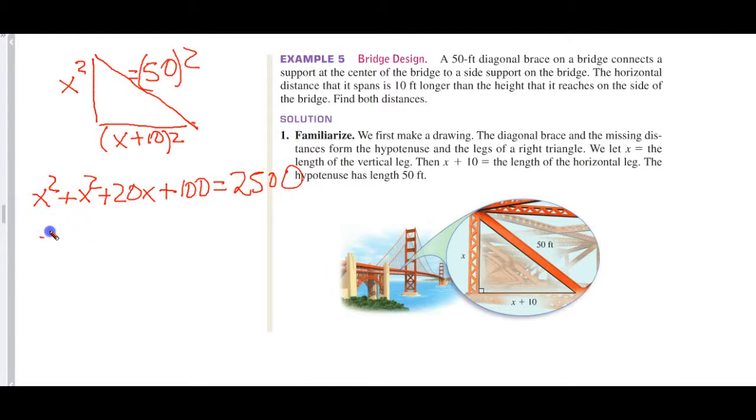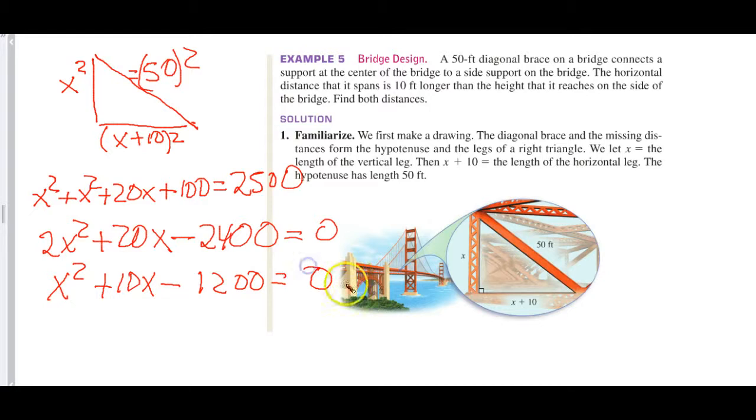This becomes 2X² + 20X. We bring that over as a negative 2400, doing this in my head, and normally you should probably write it down. Now, I can, and all of that equals zero. So I could factor out a 2, and I get X² + 10X - 1200 = 0. I think this was done correctly. Again, I'm not writing it out, I'm showing you it quickly.